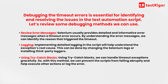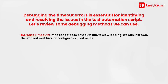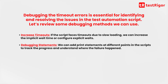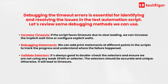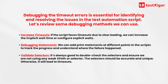With try-catch blocks, we can prevent the scripts from failing abruptly and help execute other actions or log the error. Increase timeouts — if the script faces timeouts due to slow loading, we can increase the implicit wait time or configure explicit waits. Debugging statements — we can add print statements at different points in the scripts to track the progress and understand where the failure happened. Validate selectors — it's always good to double-check the selectors and ensure we are not using any weak XPath or selector. The selectors should be accurate and unique, otherwise it will lead to timeouts.